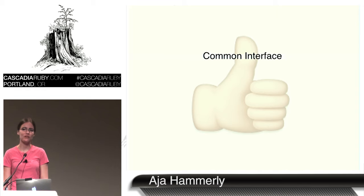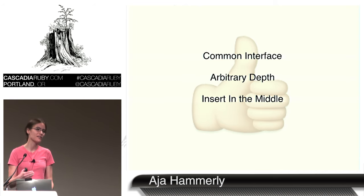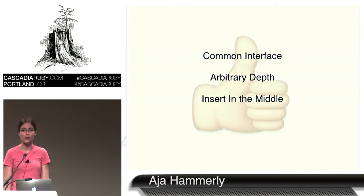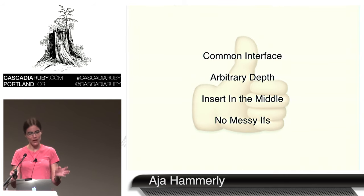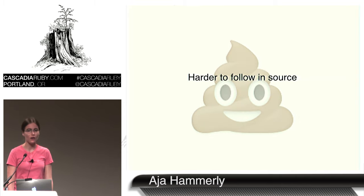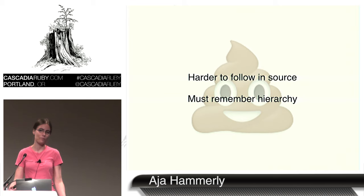Advantages of composite: you only have to use one common interface, your consumers don't have to know how many objects they're dealing with, you can have arbitrary depth, and you can frequently insert new levels in the middle of your hierarchy. No messy ifs — and a Ruby pro tip: if you are checking the class of something in Ruby, you're probably doing it wrong. Downsides: it's harder to follow in source. You have no idea in that report-score method what class that thing is — if it's one student or 40,000 students in a district. That has significant performance implications.